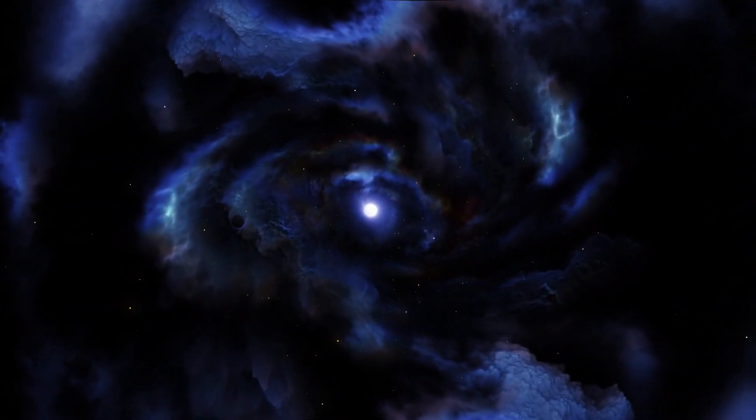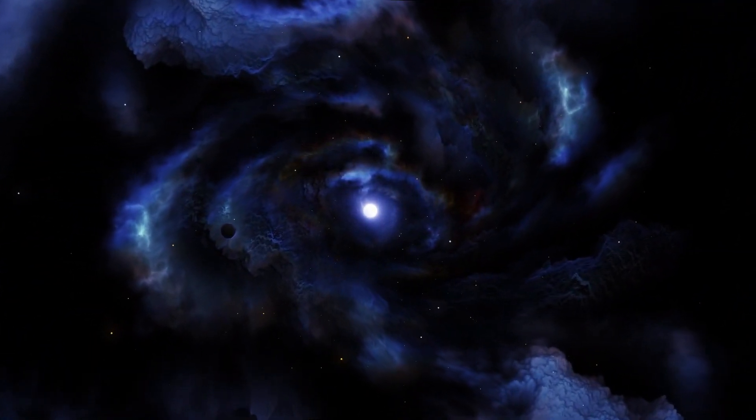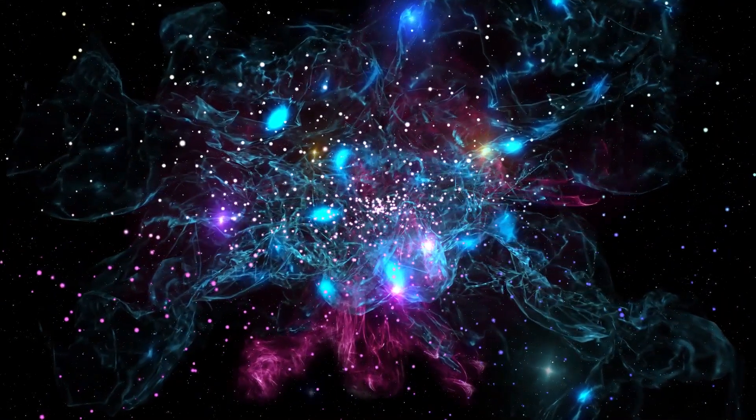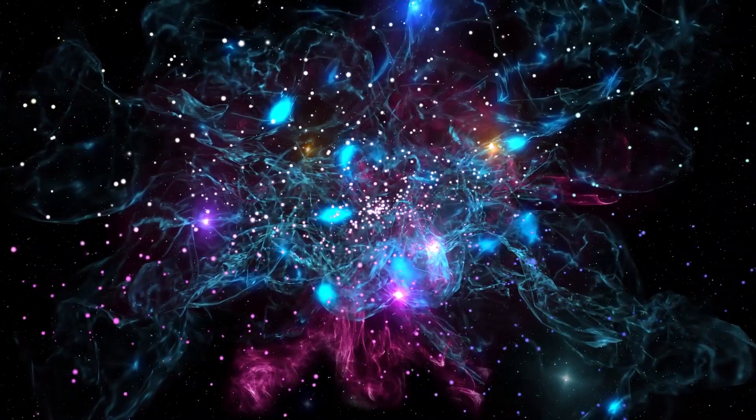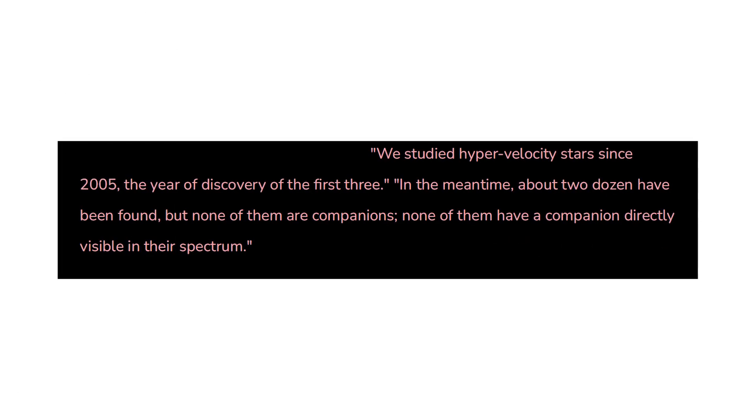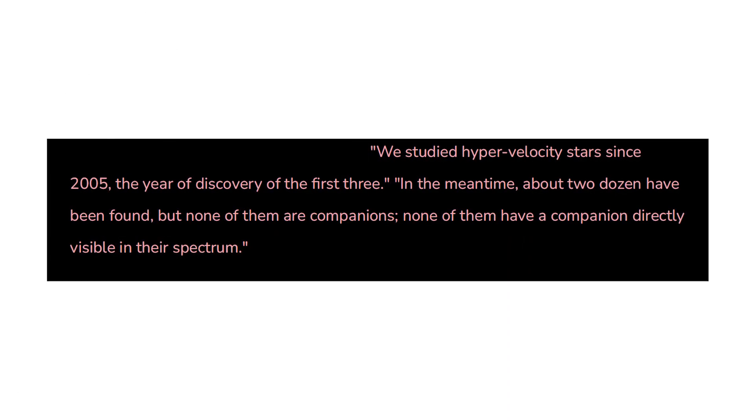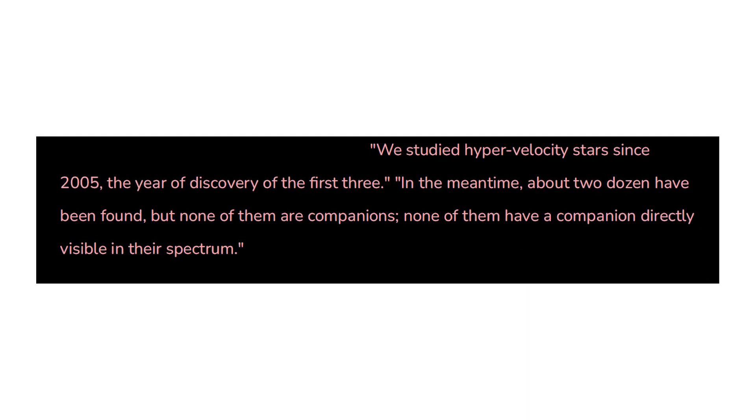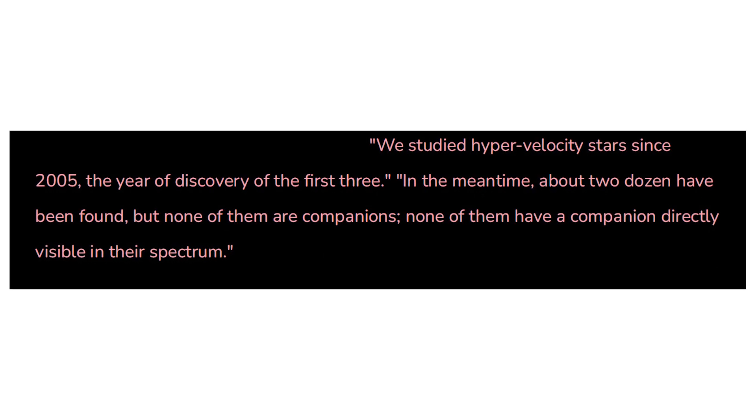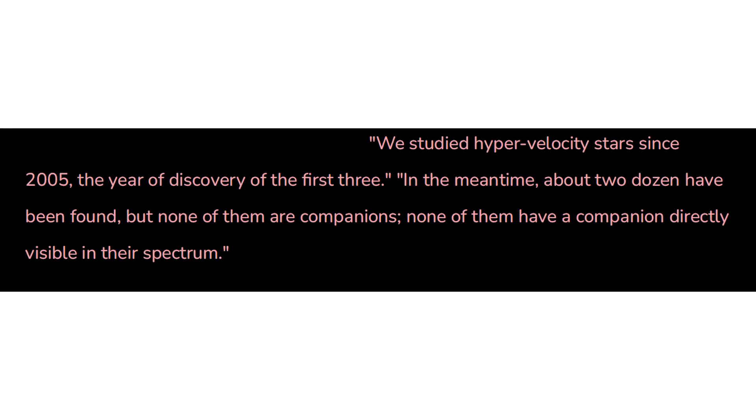However, all of the other hypervelocity stars that we have discovered up until this point have been solitary stars. Astronomers have made history by discovering a binary star system that travels at a speed faster than light for the first time. Ulrich Heber, a researcher at Friedrich Alexander University in Germany and one of the people responsible for the discovery said, we studied hypervelocity stars since 2005, the year of discovery of the first three. In the meantime, about two dozen have been found, but none of them are companions. None of them have a companion directly visible in their spectrum.